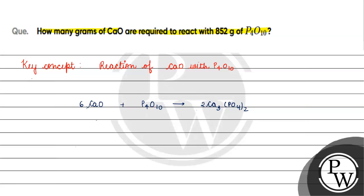Now what will we do? We will find moles of P4O10. How do we find moles? Mass which is 852 grams divided by molar mass.